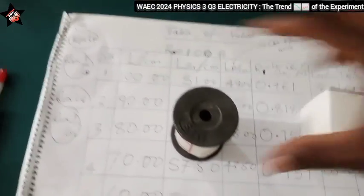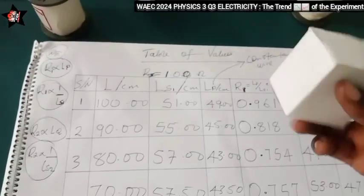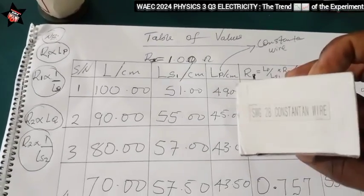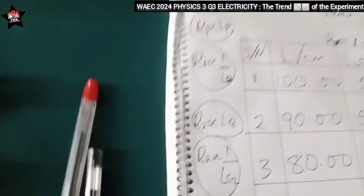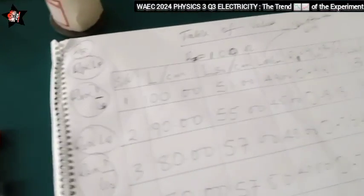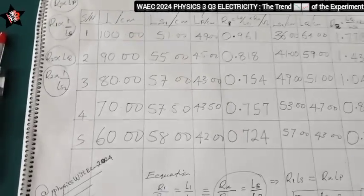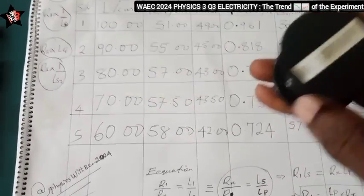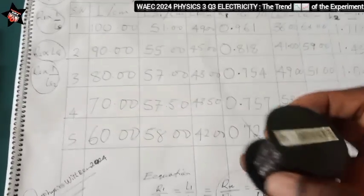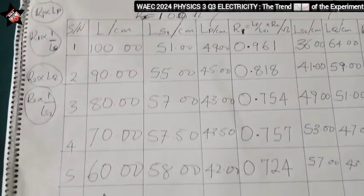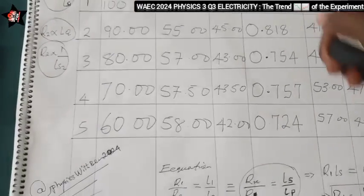I now tried with the constantan wire. This is the constantan wire. I tried with this wire and this was what I got with the wire. I got clean values and the trend was revealed.